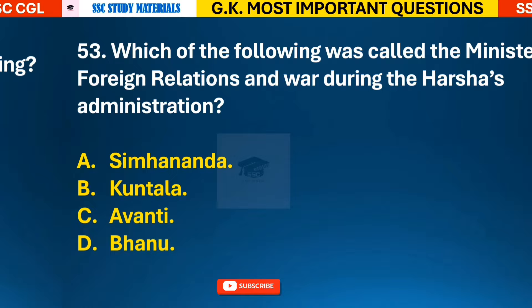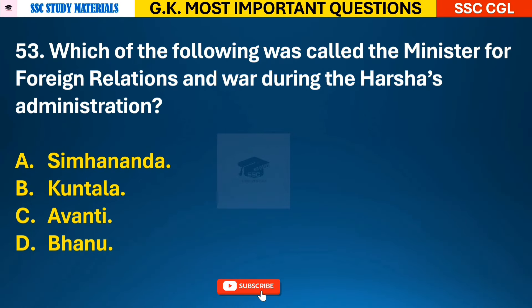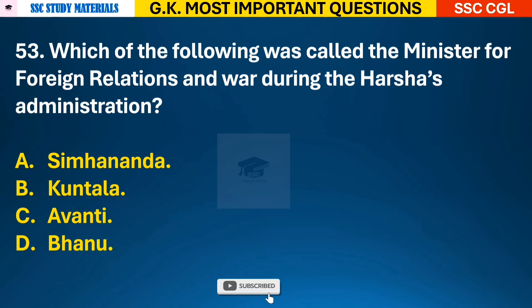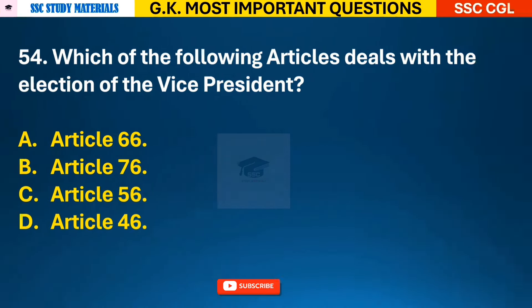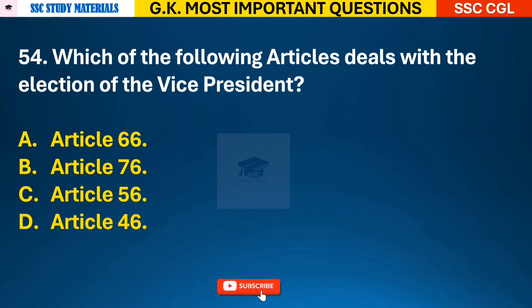Question 53: Which of the following was called the minister for foreign relations and war during Harsha's administration? Answer C - Avanti. Question 54: Which of the following articles deals with the election of the Vice President? Answer A - it is Article 66.